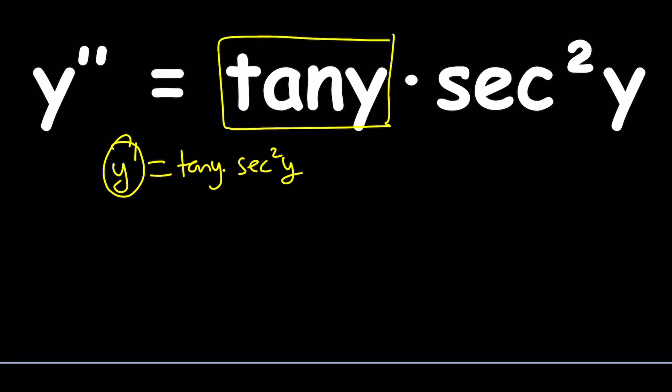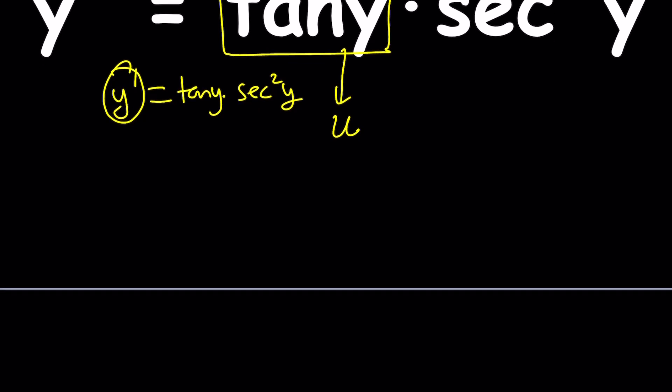Let's start by using substitution. We're going to call this u, so u equals tangent y. And from here, we're going to evaluate u prime. The derivative of u is going to be secant squared y, the derivative of tangent, multiply by y prime.